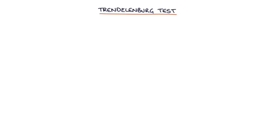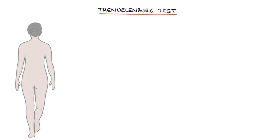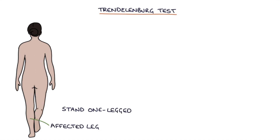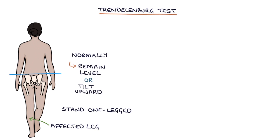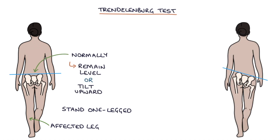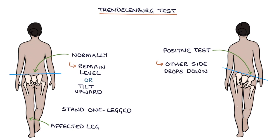The Trendelenburg test involves asking the patient to stand one-legged on the affected leg. Normally the other side of the pelvis should remain level or tilt upward slightly. A positive Trendelenburg test is when the other side of the pelvis — opposite to the leg the person is standing on — drops down, and this suggests weakness in the affected hip.